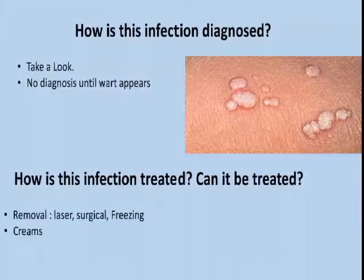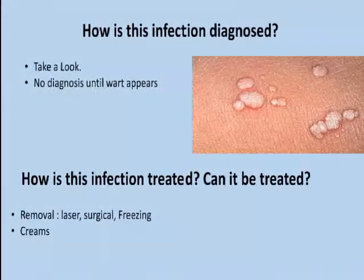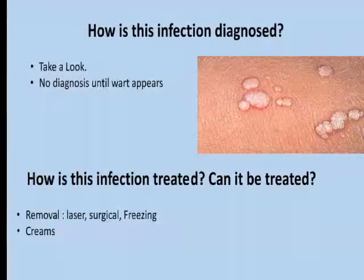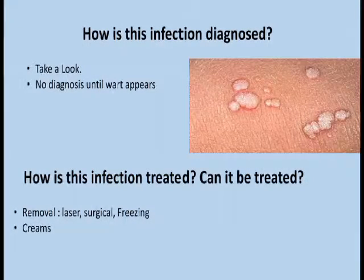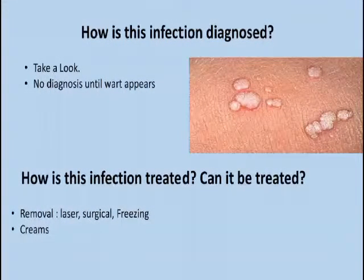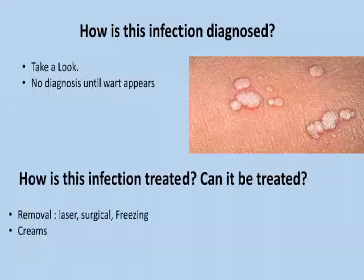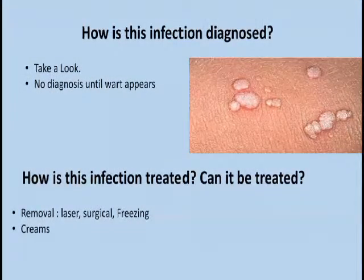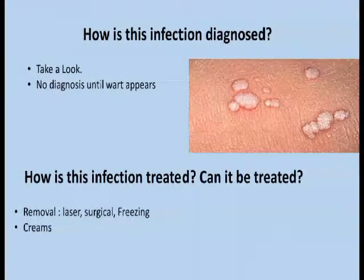There is no diagnosis of genital warts until a wart appears. A person may have the HPV virus and never display symptoms. A person who is unaware that they have contracted HPV can unknowingly spread the infection. Warts appear as pink, flesh-coloured, and can be raised, flat, or a characteristic cauliflower shape.